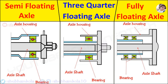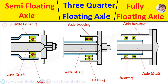The next type is the fully floating axle. In this type, two taper roller bearings are used, placed between the axle housing and wheel hub. Since the load of the vehicle is supported completely by the axle housing, the axle only transmits driving torque. This type of axle construction is more expensive than the others and is used in trucks.